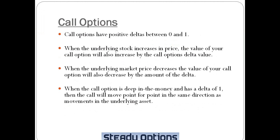When the underlying stock increases in price, the value of your call option will also increase by the call option Delta value. For example, if an option has a Delta of 1 and the stock moves by $1, the call option will also increase in value by $1. If a call option has a Delta of 0.5 and the stock moves by $1, the call option will increase in value by $0.50. When the underlying market price decreases, the value of your call option will also decrease by the amount of the Delta. When the call option is deep in the money and has a Delta of 1, then the call will move point for point in the same direction as movements in the underlying asset.